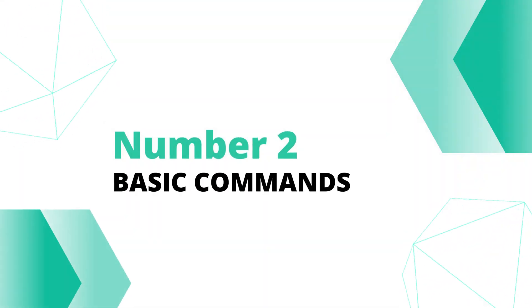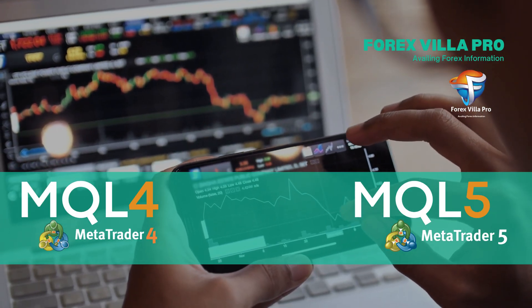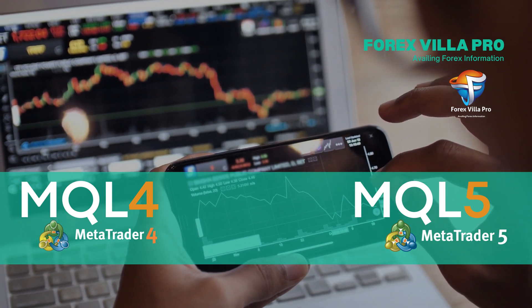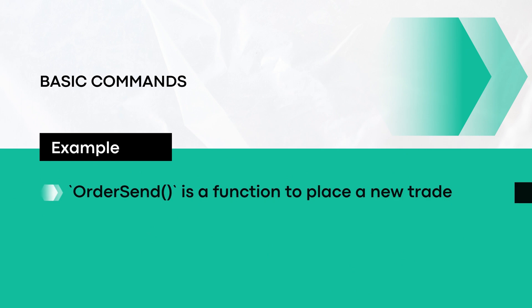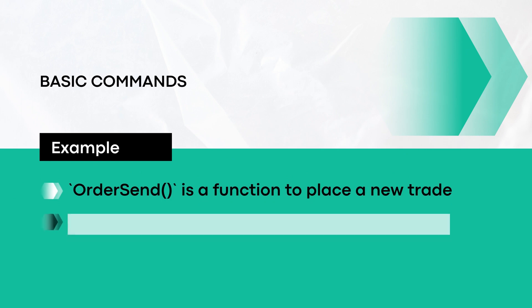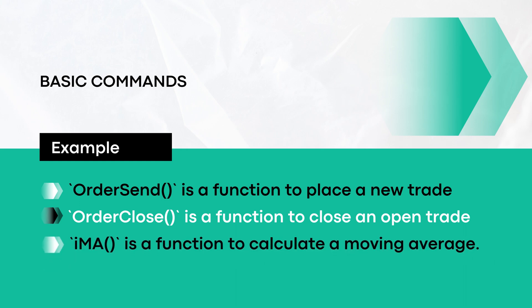Number 2: Basic Commands. MQL4 and MQL5 come with predefined functions for common tasks in trading automation. For example, OrderSend is a function to place a new trade, OrderClose is a function to close an open trade, and iMA is a function to calculate a moving average.